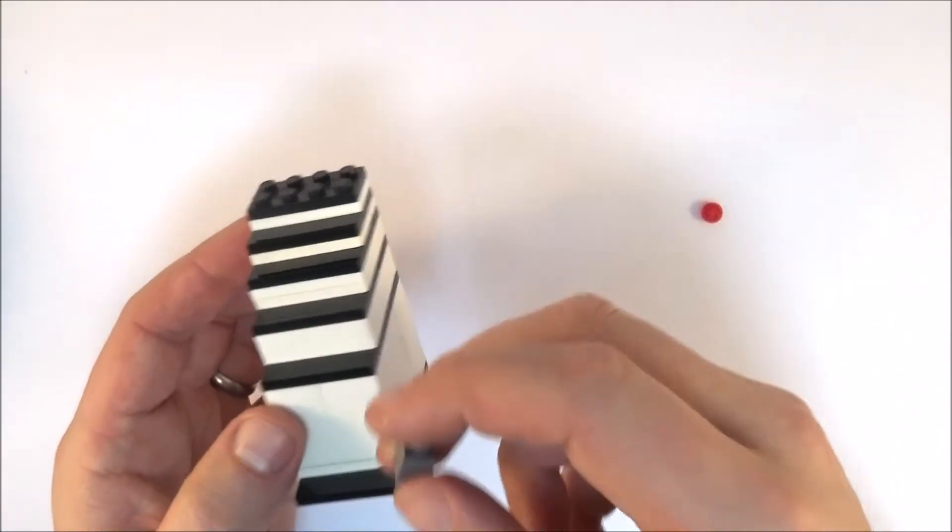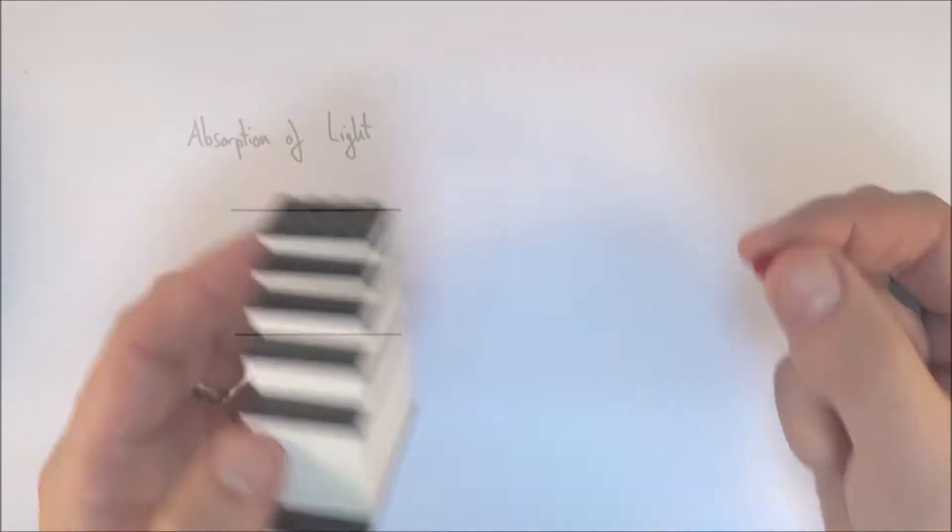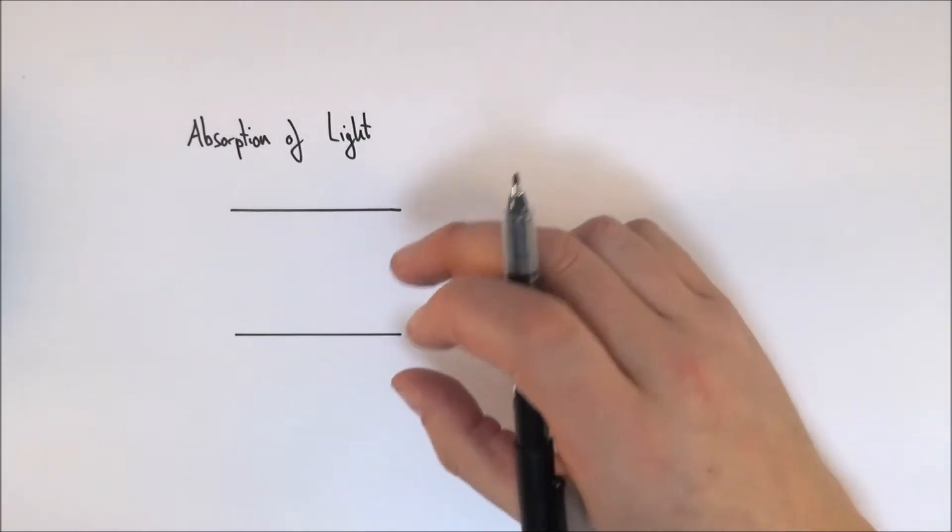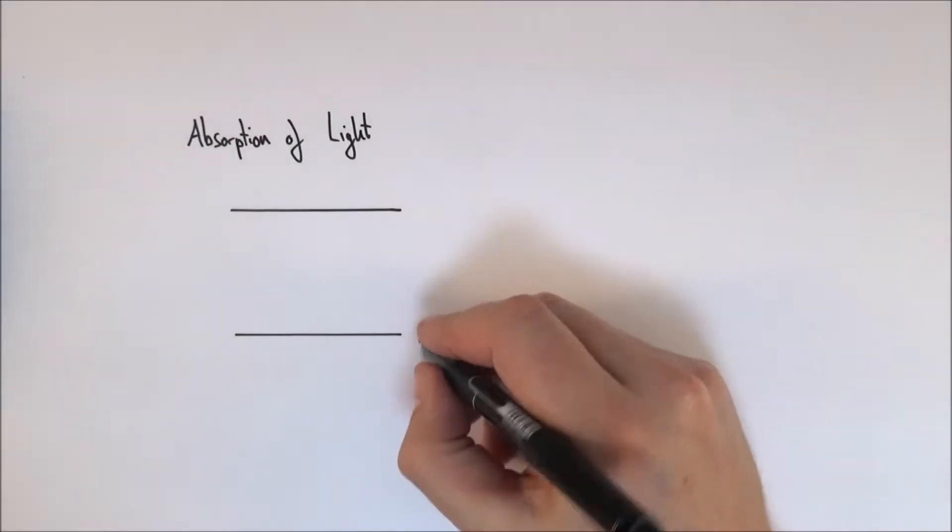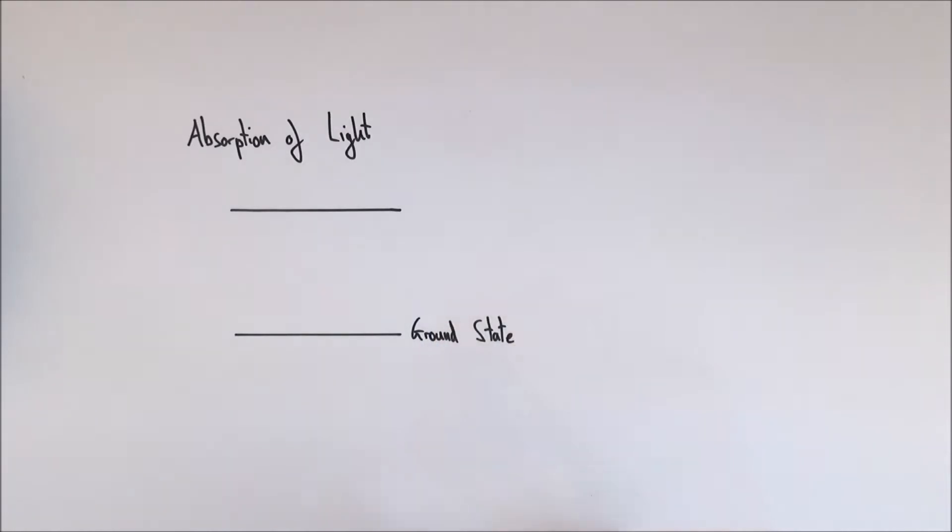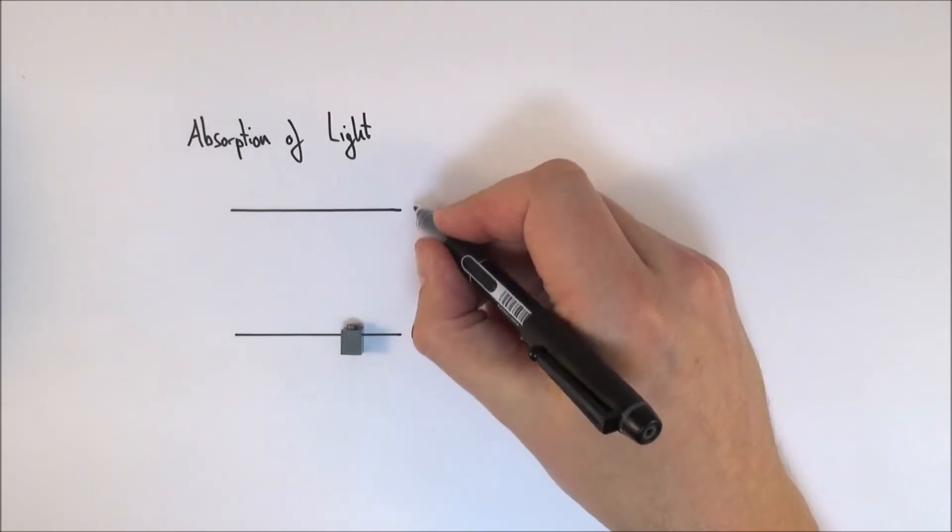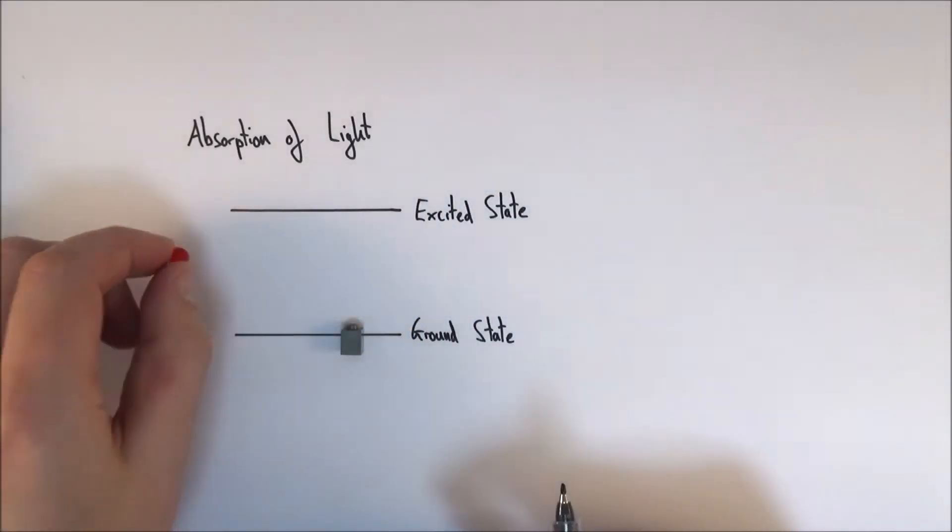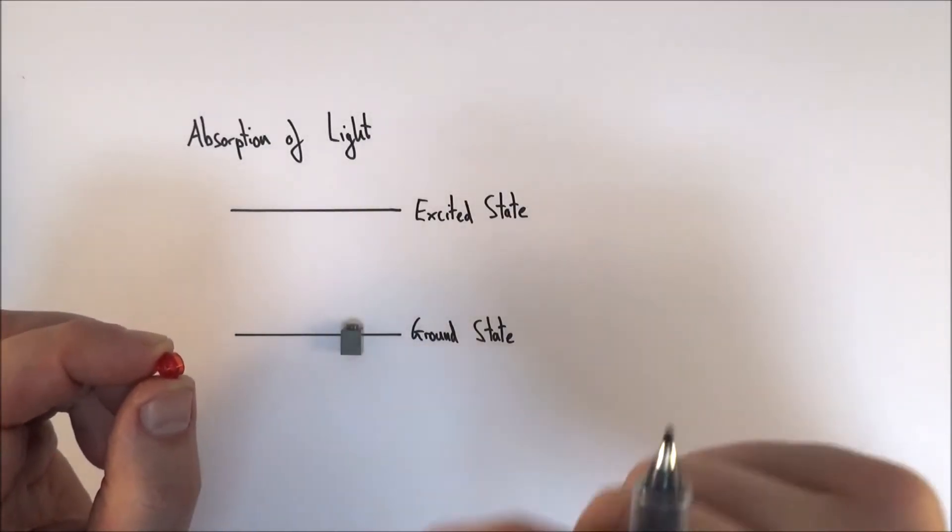What we're going to look at first of all is what happens if a photon is absorbed by an atom. We can think about different energy levels that the electrons can be in. The one at the bottom is called the ground state, which is where the electron likes to sit. But it can also be excited into the excited state. Now what happens is if you have some light, if it's exactly the right amount of energy, and you've got to remember that E is equal to hf.